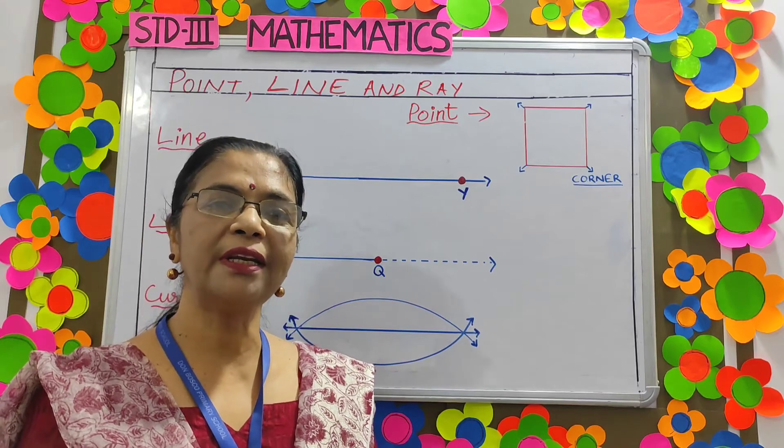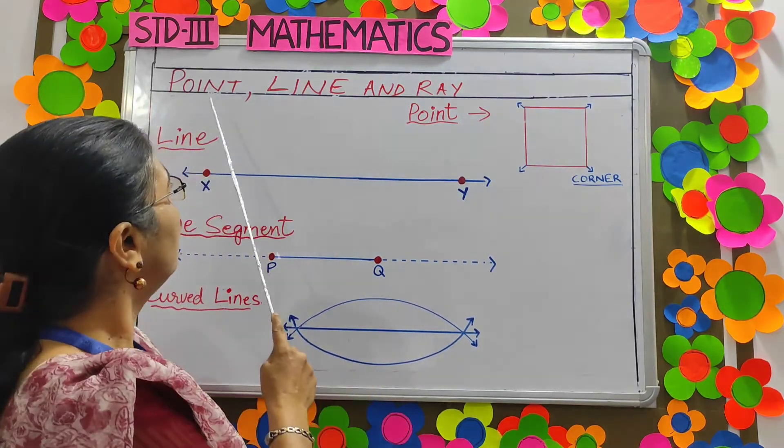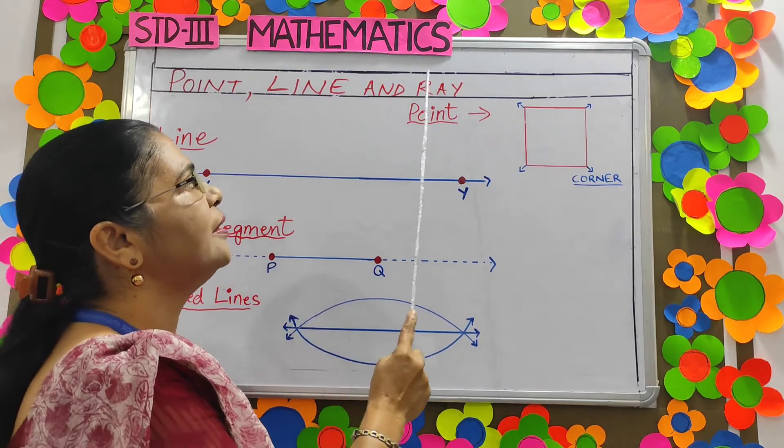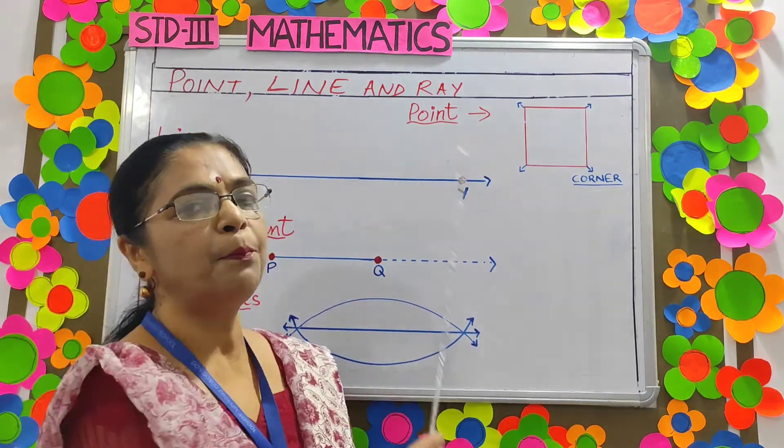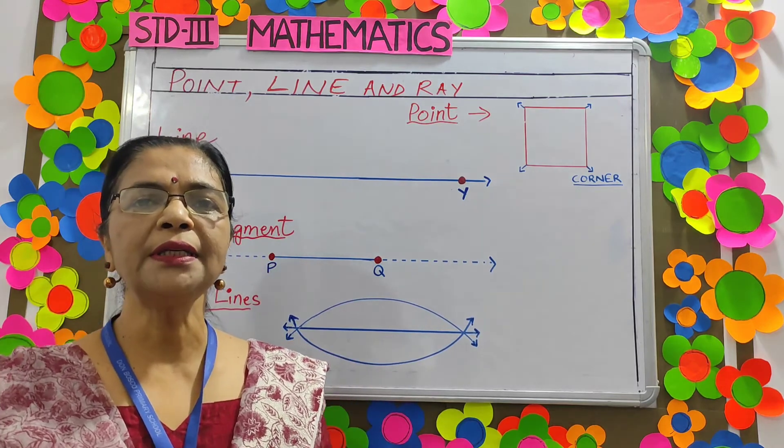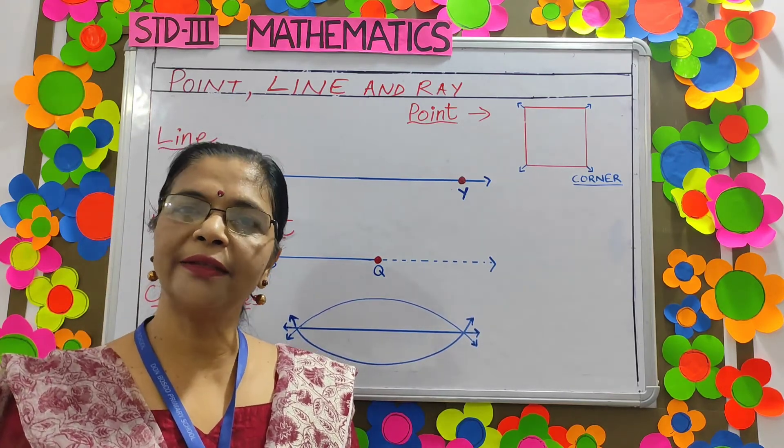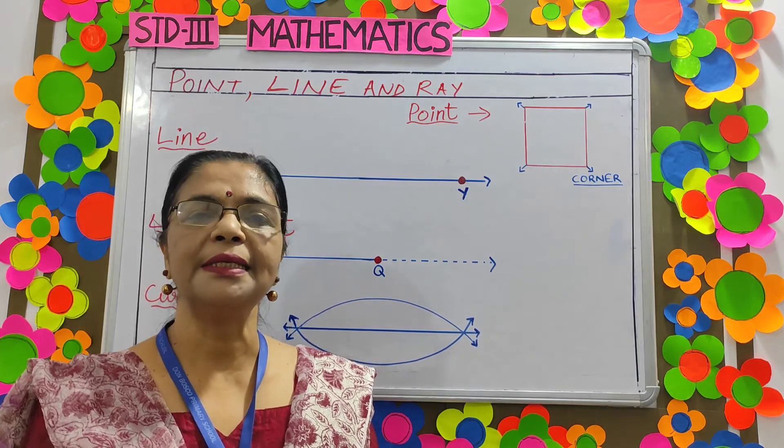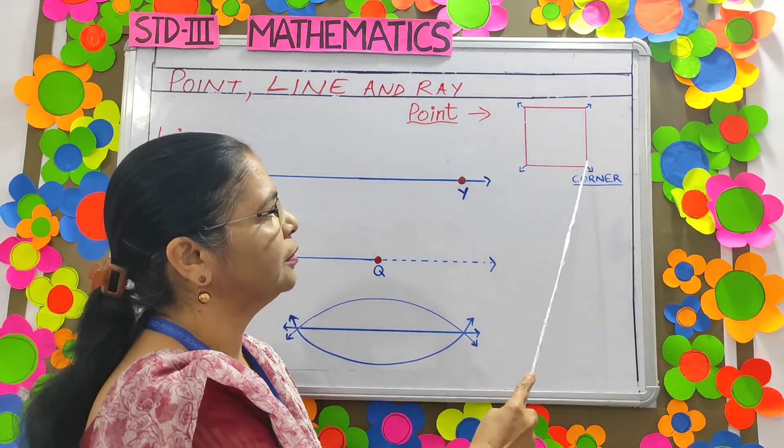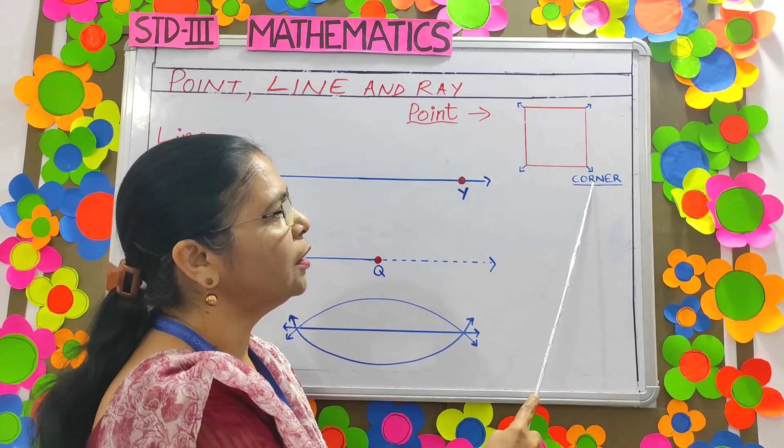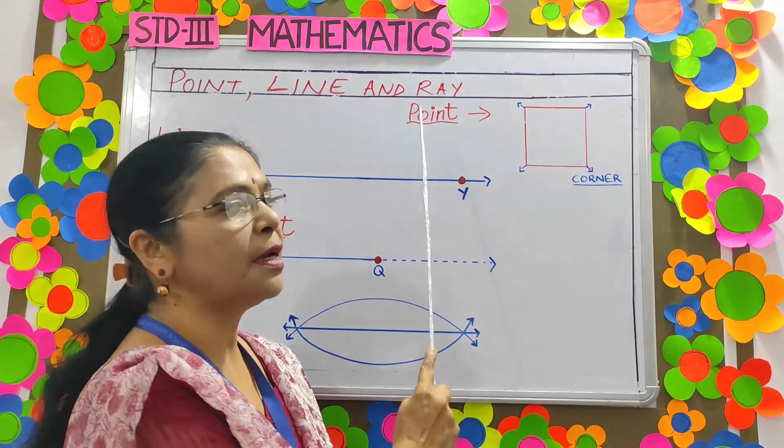Now children, let's learn about point, line and ray. First, a point. A point does not have length or thickness. It simply shows a position. Here the corner or the vertex is the point.